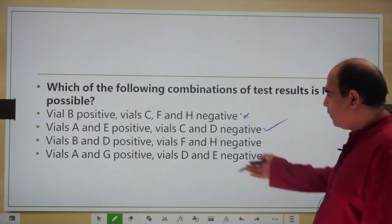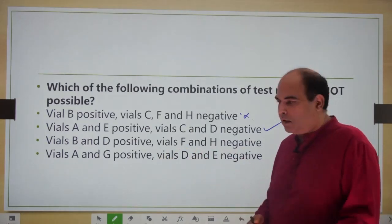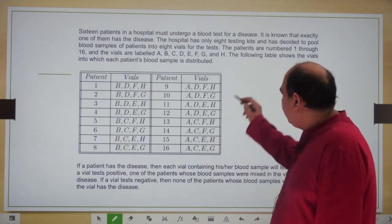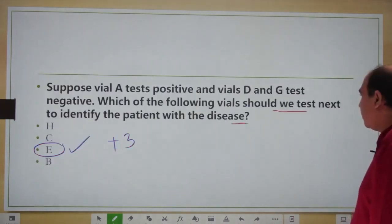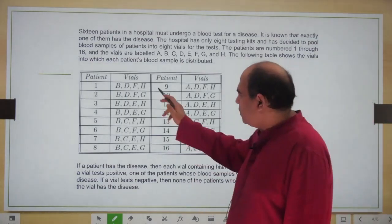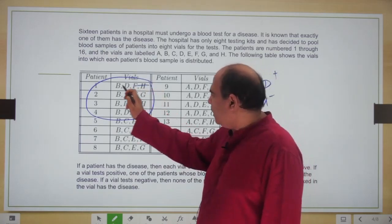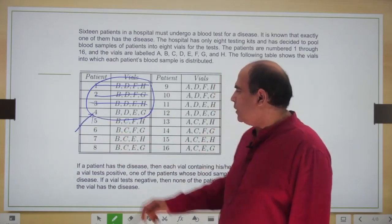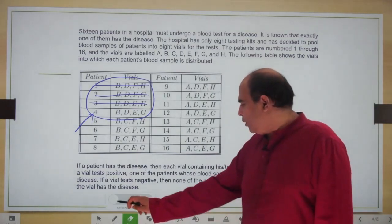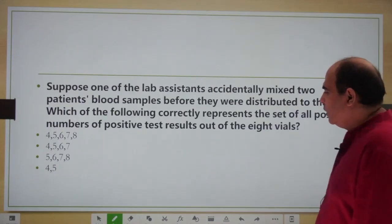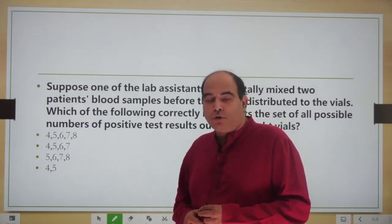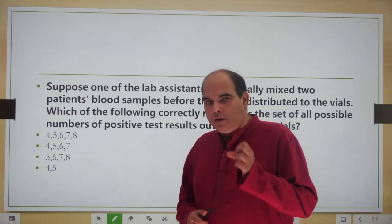For completeness: option C — vials B and D positive, F negative. B and D positive means patients 1 to 4. F negative removes patients 1, 2, and 3, leaving patient 4 as the diseased person — so this is possible. Clearly option B is the correct answer. You can verify the fourth option inside the exam with confidence. The last couple of questions in a DILR set typically force you to think a bit more than the first few.